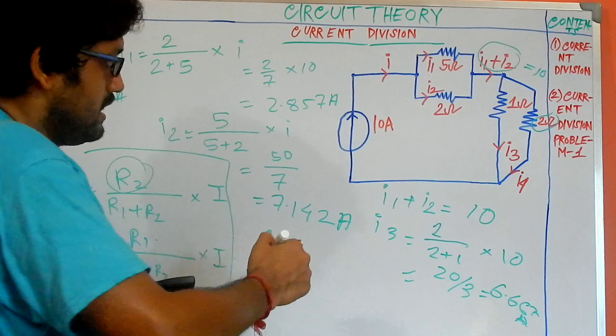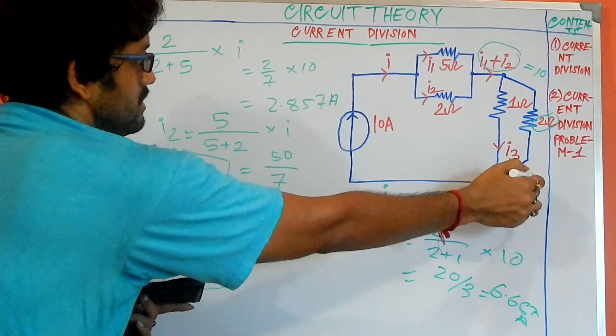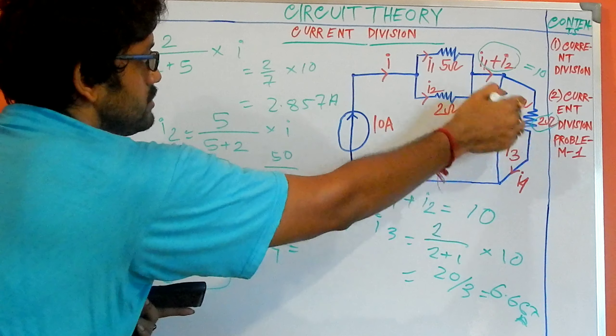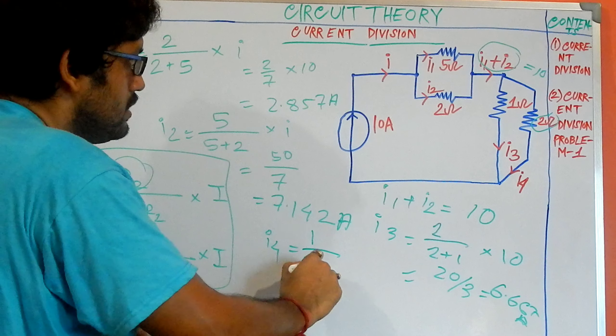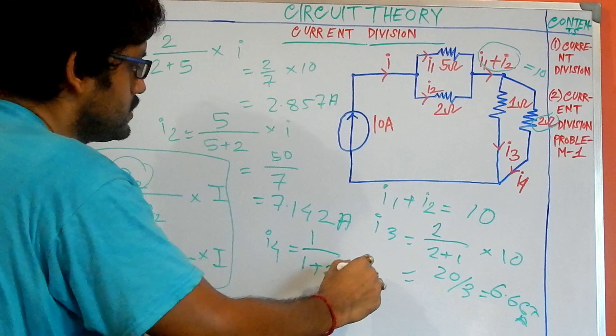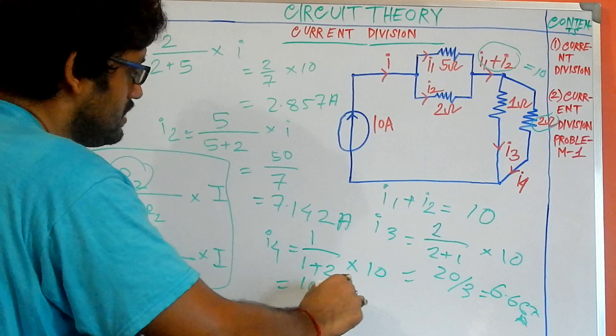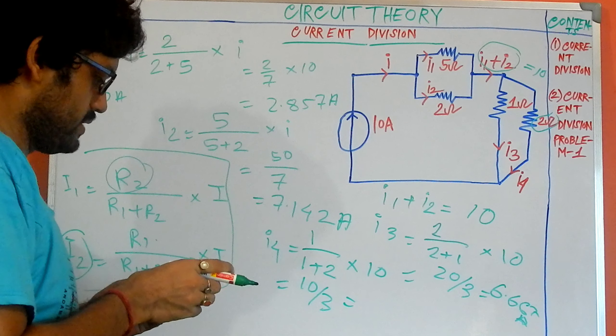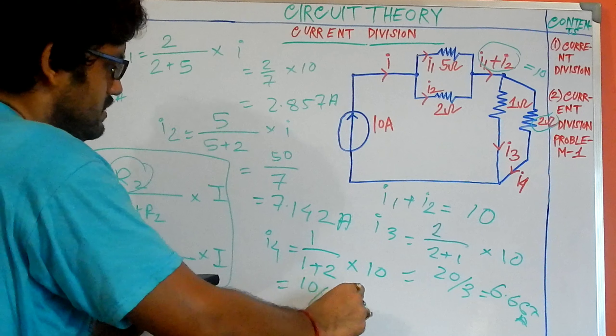And lastly the value of I4: the I4 arm is this one, so the opposite resistance is 1. So 1 divided by 1 plus 2 multiplied with total current, our total current is 10. So 10 by 3, which equals 3.333.